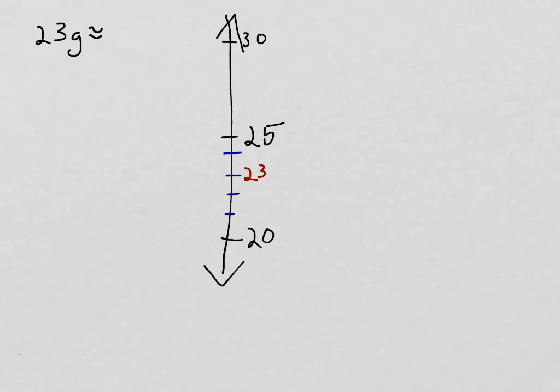I could also just estimate where that is, but I'll show you that in the next one. So, 23 is below 25. Here's 25, here's 23. Anytime the number is below the halfway point, we round down to the nearest 10. So, 23 grams is about 20 grams. That's our estimate.